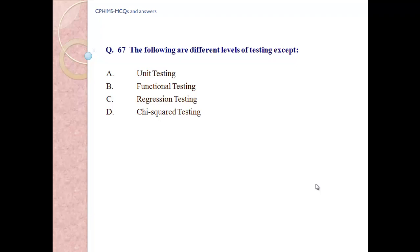Question number 67. Which of the following are different levels of testing, except: A. Unit testing. B. Functional testing. C. Regression testing. D. Shysquat testing. Answer D. Shysquat testing.